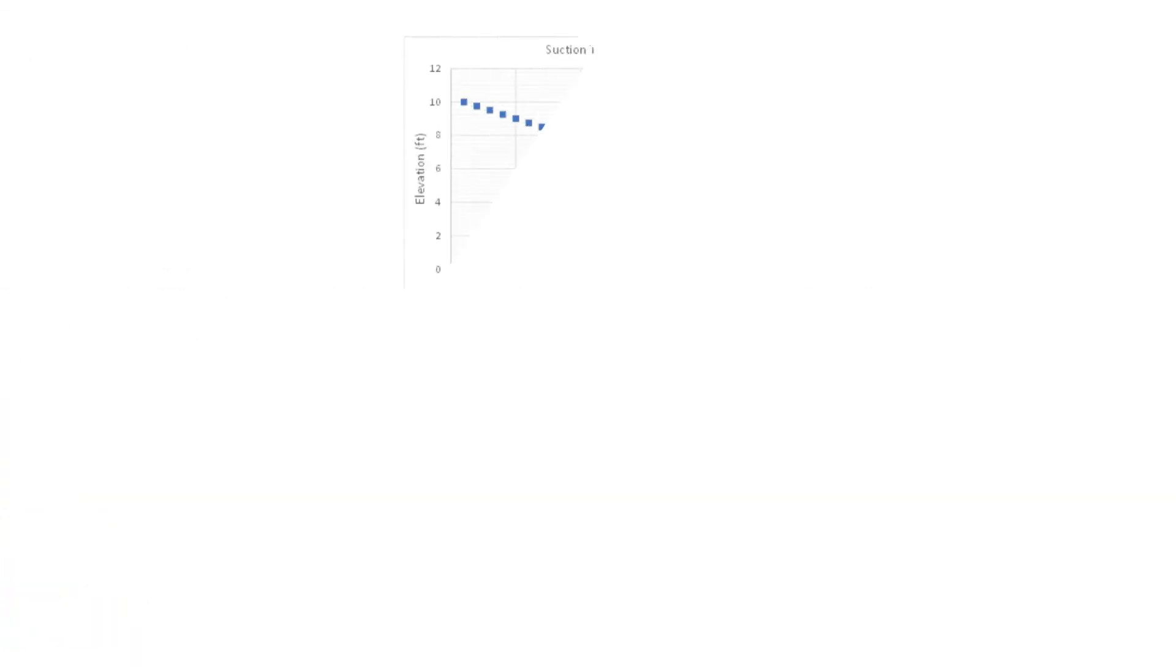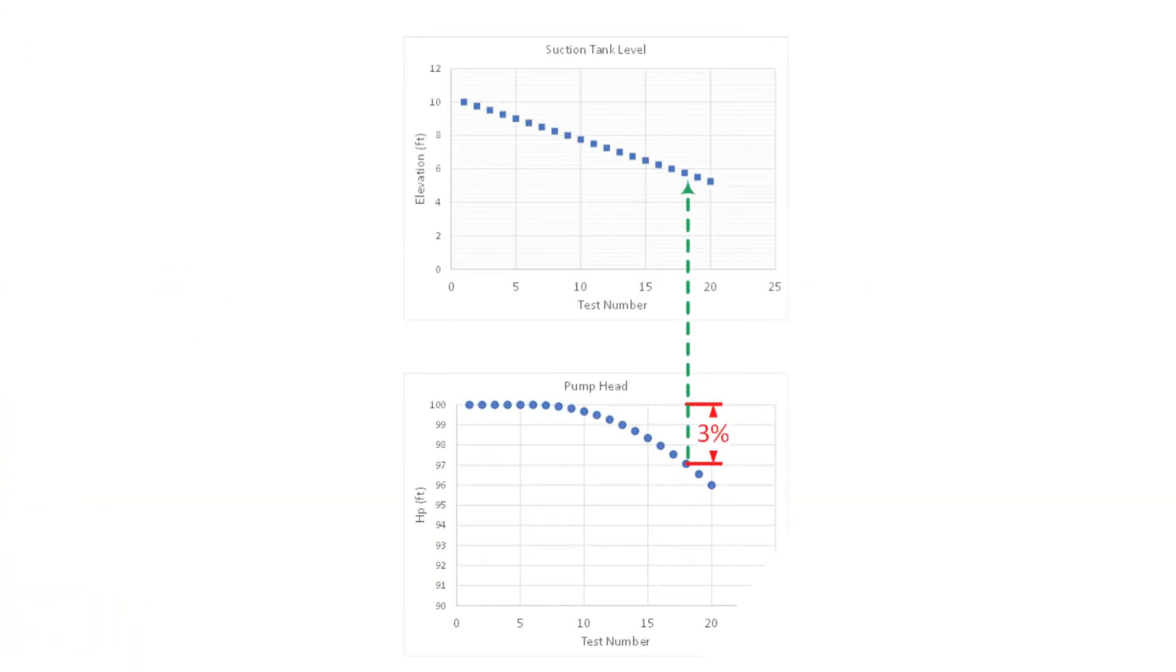Let's look at the process with the two plots provided here. The top chart plots the water level in the suction tank. The bottom chart plots the pump head. Notice that the pump head is constant for the first eight tests and then starts to drop off. Once pump head has decreased three percent from its initial value, that point is used to define net positive suction head required.